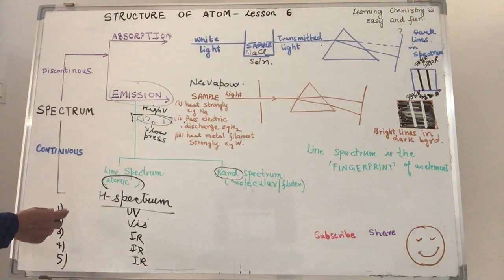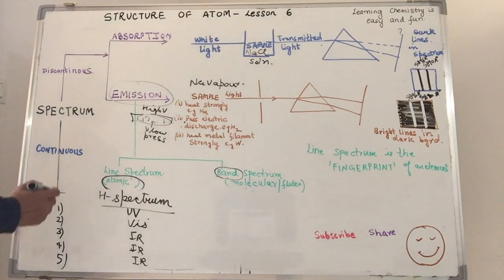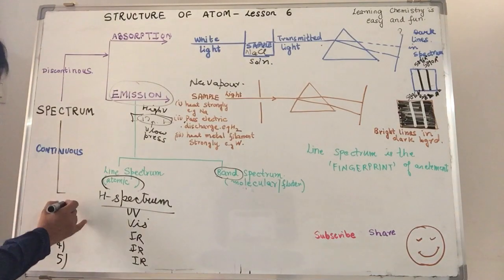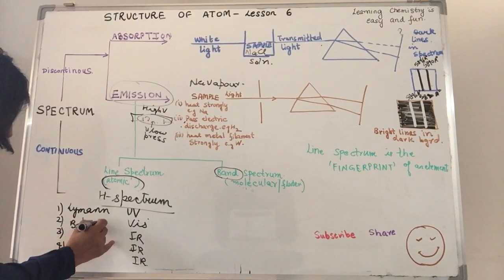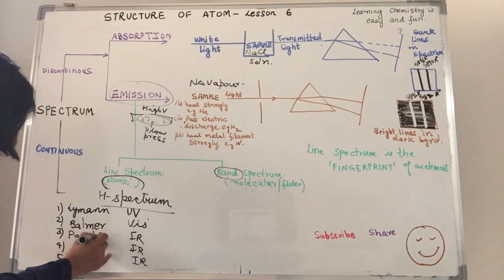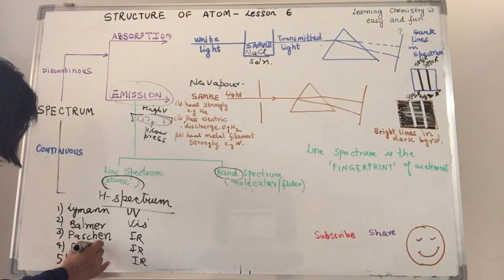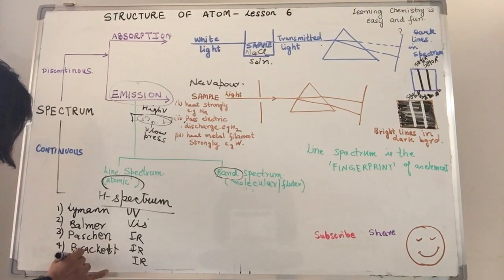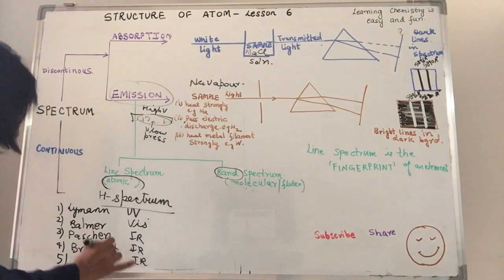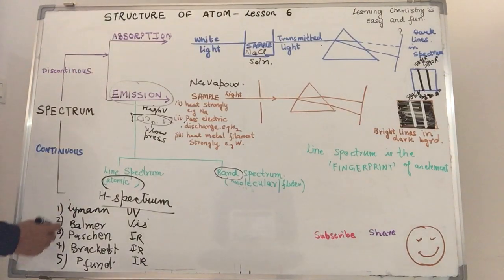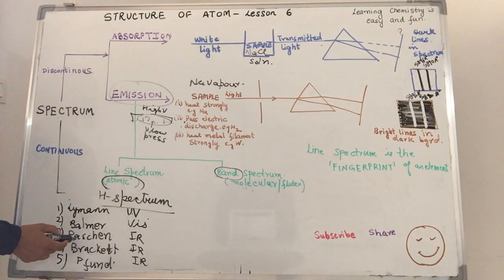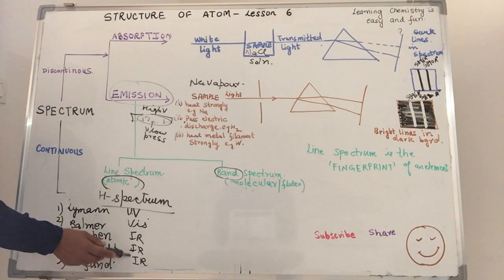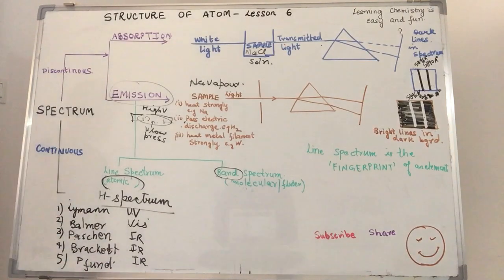These were named differently after the scientists who did work on them. So we have the Lyman, Balmer, Paschen, Brackett and the Pfund series. So we have these five zones in the hydrogen spectrum. Lyman lying in the ultraviolet zone, Balmer in the visible zone and the rest three in the infrared zone of the electromagnetic spectrum.